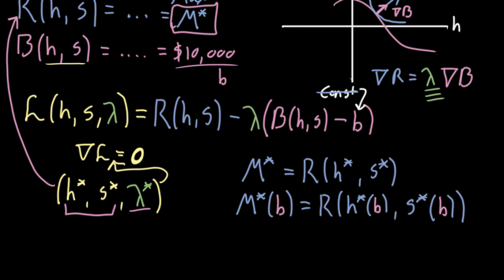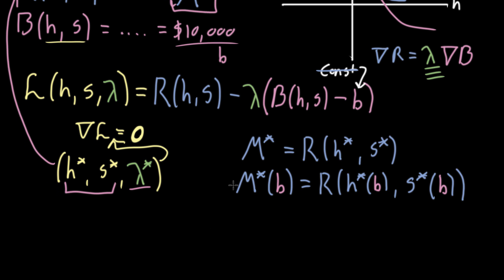So what turns out to be a beautiful, absolutely beautiful magical fact is that this lambda star is equal to the derivative of m star, the derivative of this maximum possible revenue with respect to b, with respect to the budget.